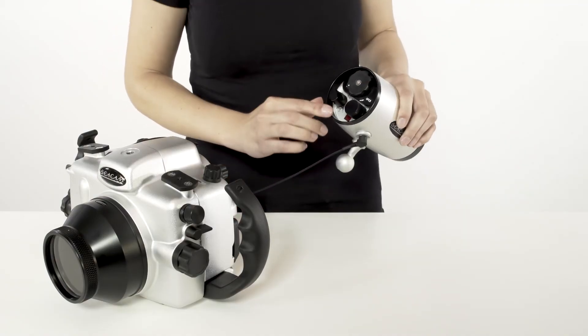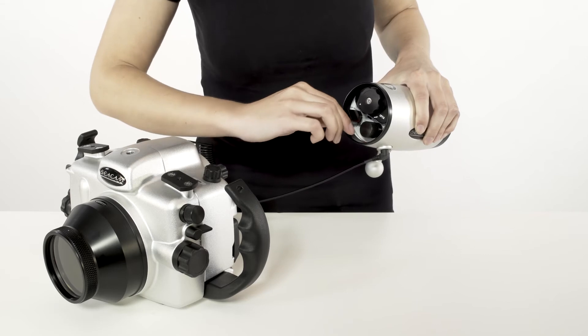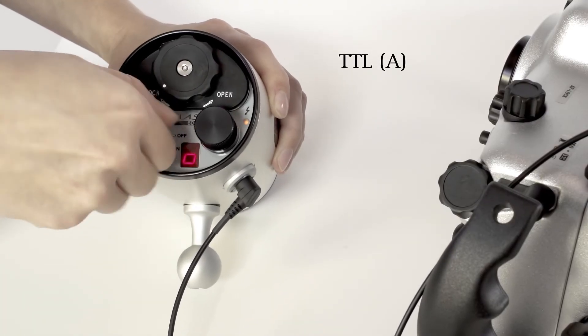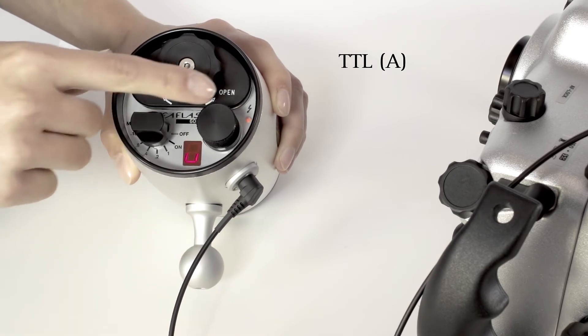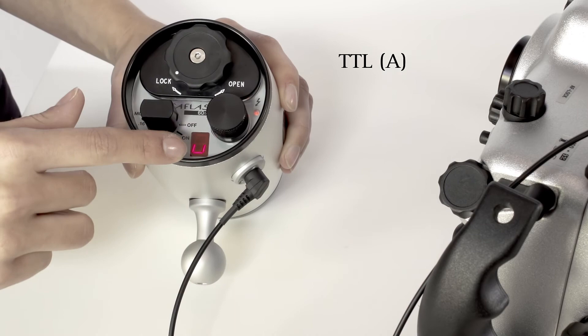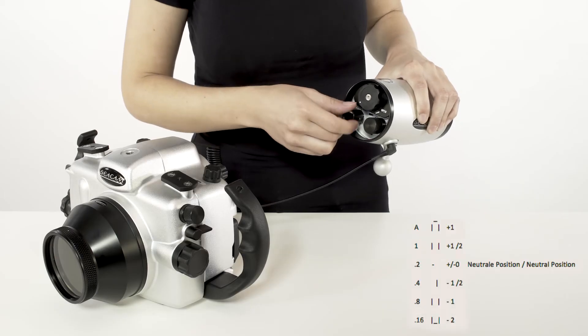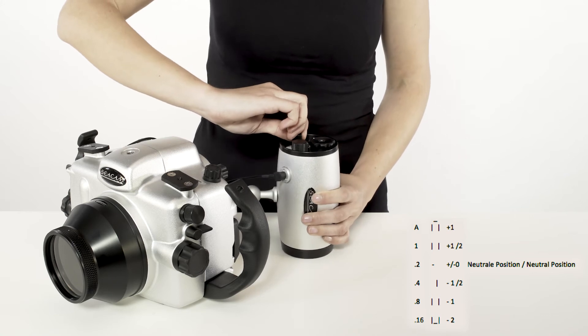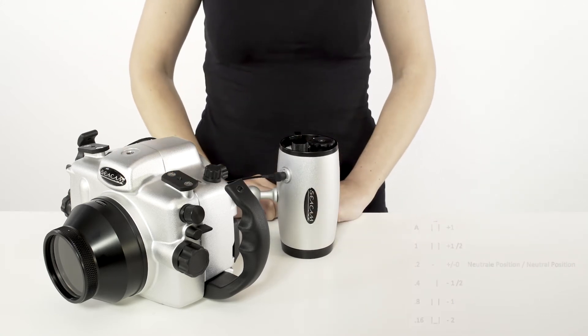For this mode, switch the main knob three times within a half second from 0.16 to mode position and back again to 0.16. The LED will show a blinking red-green light. The display, however, will not show numbers, as seen before in the manual setting, but a series of lines. These lines and their position correspond to a TTL exposure compensation.